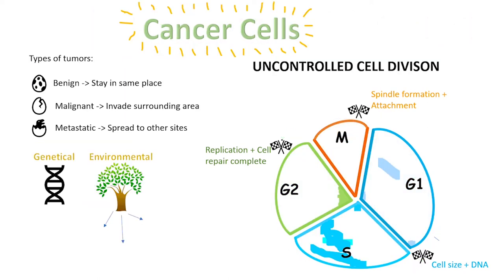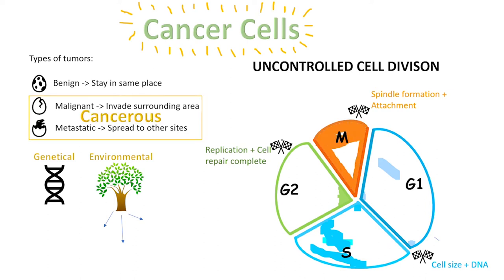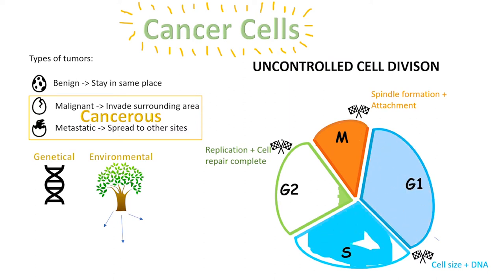Cancer cells are the result of uncontrolled cell division. There are three types of tumors that can occur. A benign tumor is non-cancerous and does not change location — this tumor grows in size. Malignant tumors invade surrounding areas. Metastatic tumors are unpredictable and spread to other sites. Both malignant and metastatic tumors are cancerous.